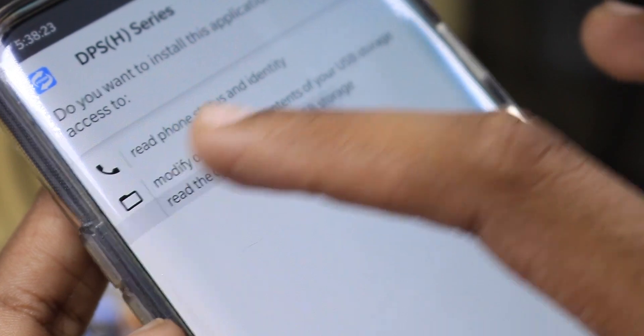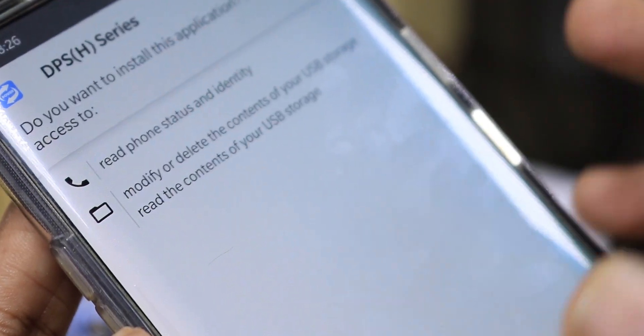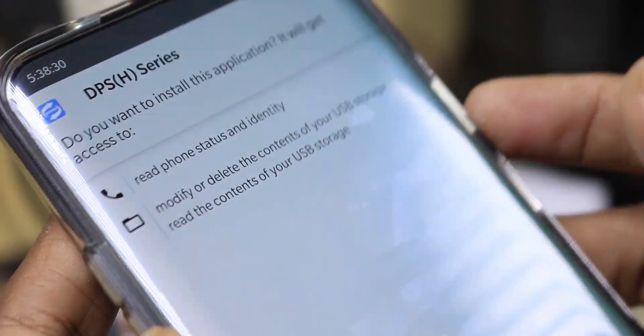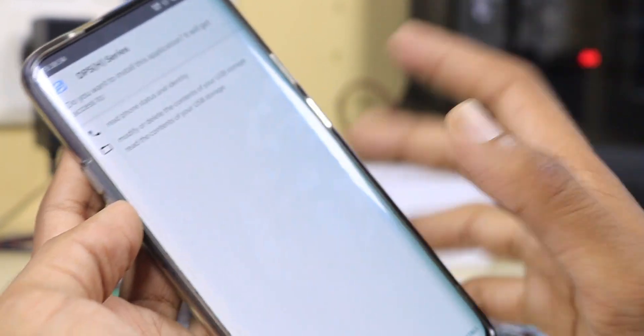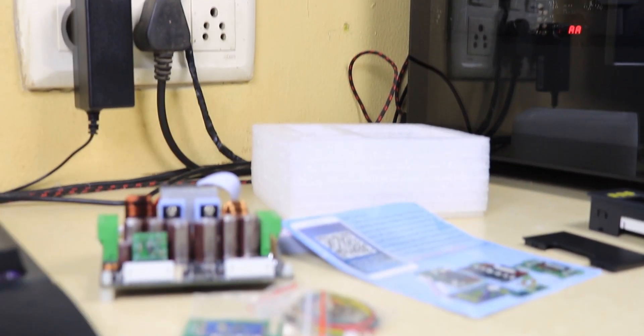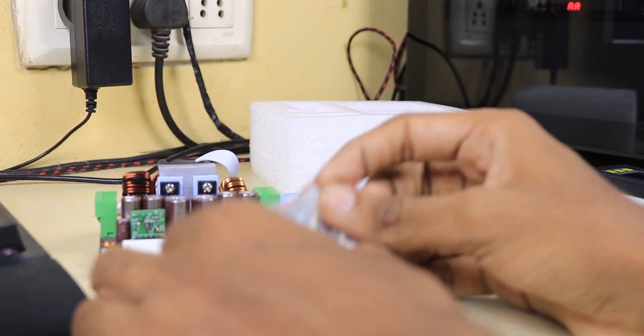The app is asking for my phone status and identity, which I don't want to give, and also to modify and delete USB storage content. This feels fishy so I'm not installing it. I looked up what it does beforehand for this video.